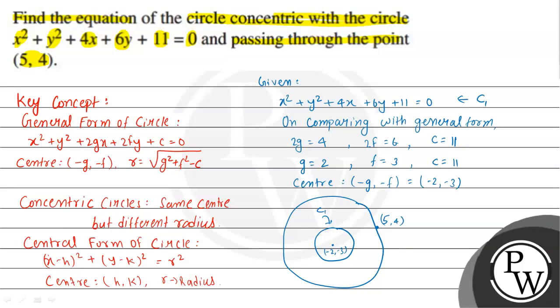It passes through (5, 4). Consider this as C₂. The line joining the center and this point (5, 4) will be the radius of the required circle.